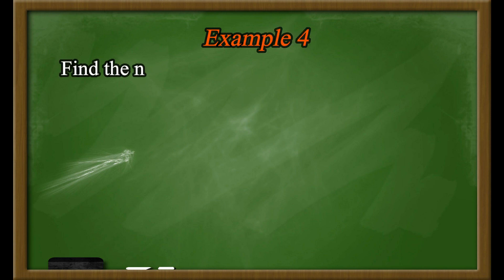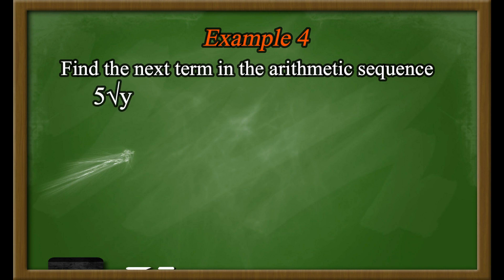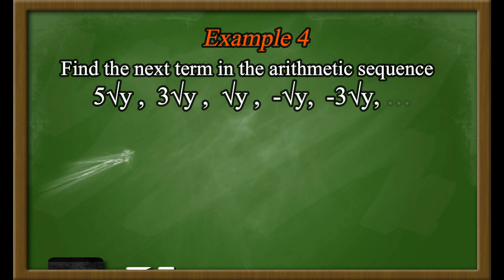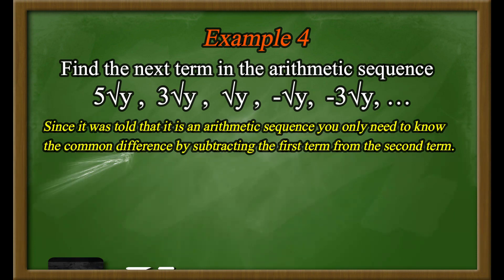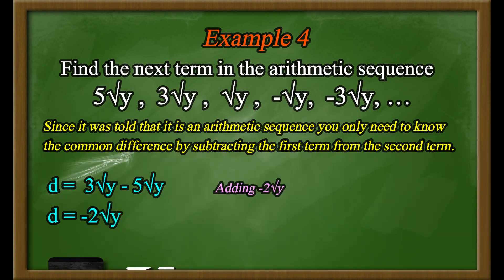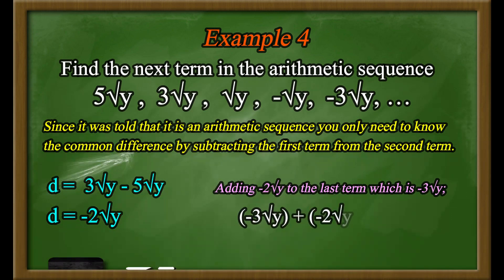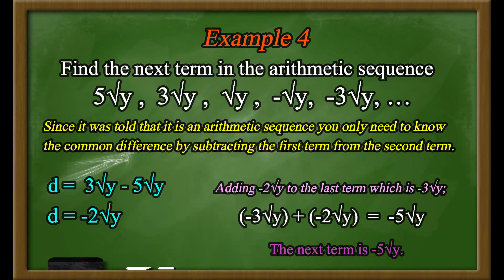Example number 4: Find the next term in the arithmetic sequence 5√y, 3√y, √y, negative √y, and negative 3√y. Since it was stated that it is an arithmetic sequence, you only need to find the common difference by subtracting the first term from the second term. The common difference D equals negative 2√y. Adding negative 2√y to the last term, negative 3√y: negative 3√y plus negative 2√y equals negative 5√y. Therefore, the next term is negative 5√y.